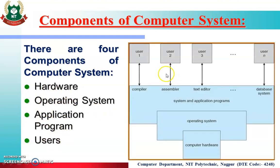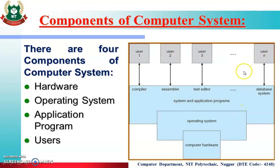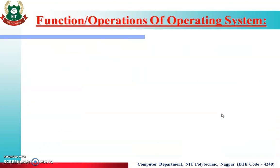This diagram shows the components of a computer system. At the base is the computer hardware. Just above it is the operating system. Above that are the system and application programs — such as compiler, assembler, text editor, and database system. And at the top are the users. There can be n number of users and n number of application programs, but for all users, one thing is common — the operating system.